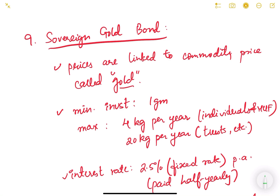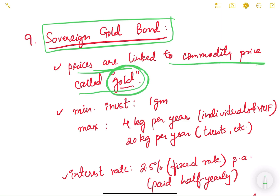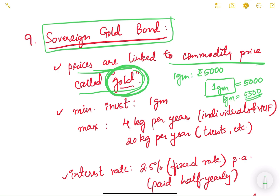The next type is Sovereign Gold Bonds. These are bonds whose prices are linked to the commodity gold. For example, if today the price of one gram of gold is rupees 5000, one sovereign gold bond equivalent to one gram will be sold at rupees 5000. If after one year the value of one gram of gold rises to rupees 5500, and you sell the bond, you will get rupees 5500 — so rupees 500 is the capital gain you receive.